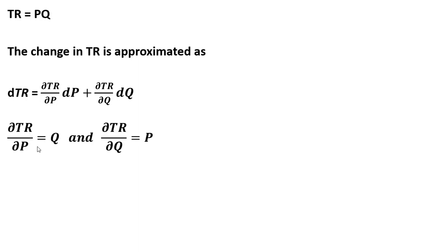So here's our partial derivatives. Partial derivative of total revenue with respect to price is Q. Partial derivative of total revenue with respect to quantity is P.